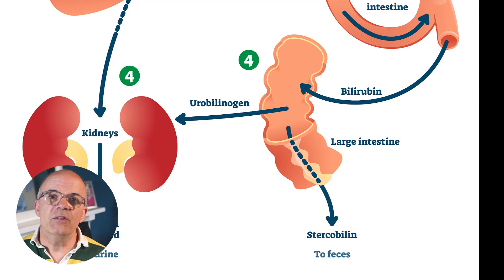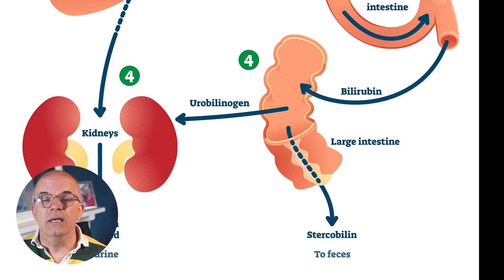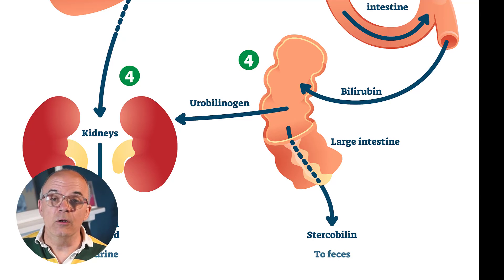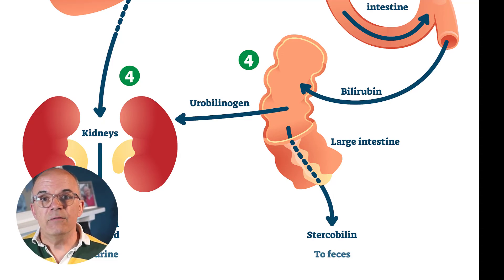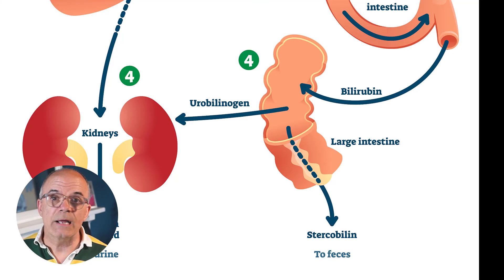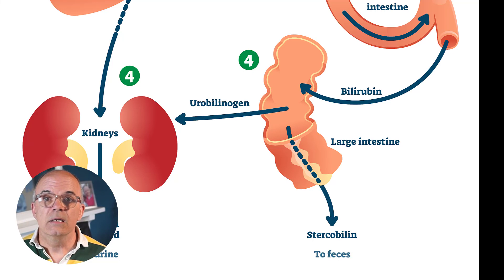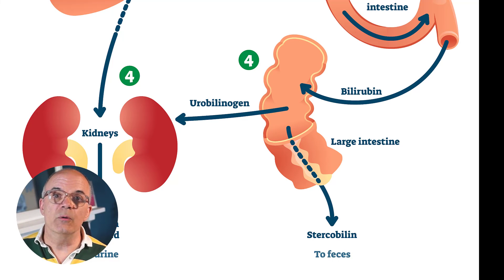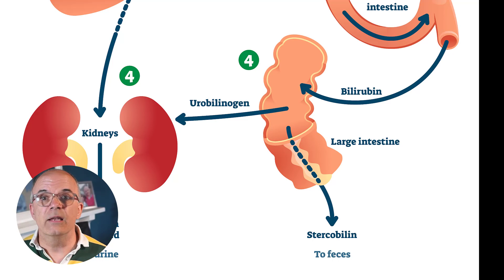Then further down the intestine in the large bowel, through the interaction with bacteria, it is further converted into urobilinogen by removal of the glucuronic acid which was added earlier. If this stays in the bowel it turns into stercobilin, which is then excreted in our faeces giving them the typical brown colour — about 85% is excreted this way. Some will also be excreted via the kidneys as urobilin, or go back through the cycle via the liver.